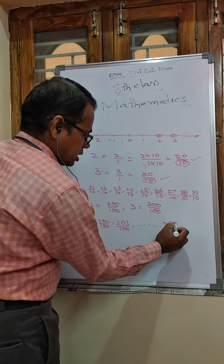Let A equal 2 and B equal 3. The mean is (A + B) / 2, which equals (2 + 3) / 2 = 5/2. So 5/2 lies between 2 and 3, meaning 2 is less than 5/2 which is less than 3. Therefore 5/2 is a rational number between 2 and 3.